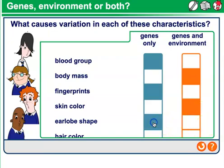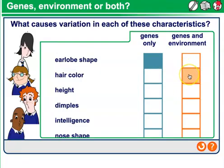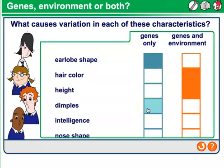Earlobe shape — genes only. Hair color — the amount of sun I get might lighten or darken my hair, so maybe both genes and environment. Height — maybe both; if I don't get adequate nutrition, my height might suffer. Dimples — probably only from genes.